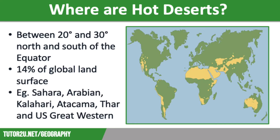Other hot deserts include the Arabian Desert in the Middle East, the Kalahari Desert in southwestern Africa, the Atacama Desert in Chile, the Australian Desert which covers huge areas of the country, the Thar Desert in India and Pakistan, and the Chihuahuan, Mojave, and Sonoran Deserts which all make up part of the western desert in the southwestern USA.